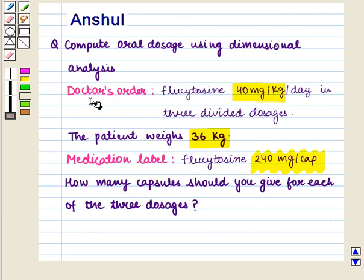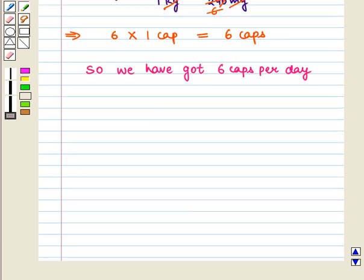Now the doctor's order says Flucytocin 40 mg per kg per day in 3 divided dosages. So it is necessary to divide the total of 6 capsules by 3 to determine the number of capsules given for each dosage.